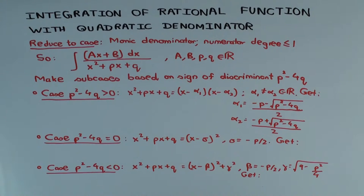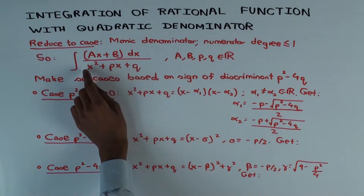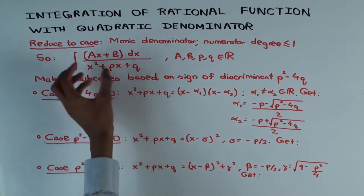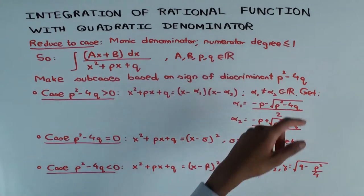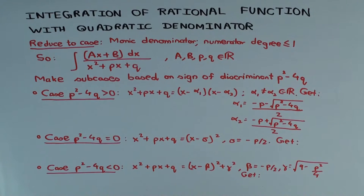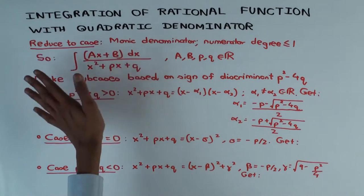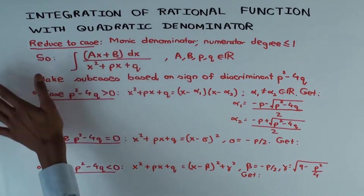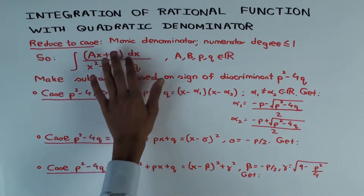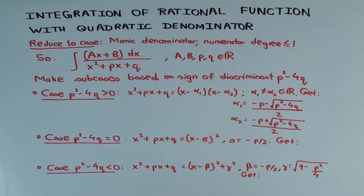We'll assume that the denominator is monic, meaning the leading coefficient is one, because if it isn't, you can just pull that out. We'll also assume that the numerator has degree less than or equal to one. If the numerator had degree two or higher, you would first do a long division — converting it to a mixed fraction, doing the polynomial part separately — and the leftover proper fraction would be of this form. So we'll just be tackling this type of integration.